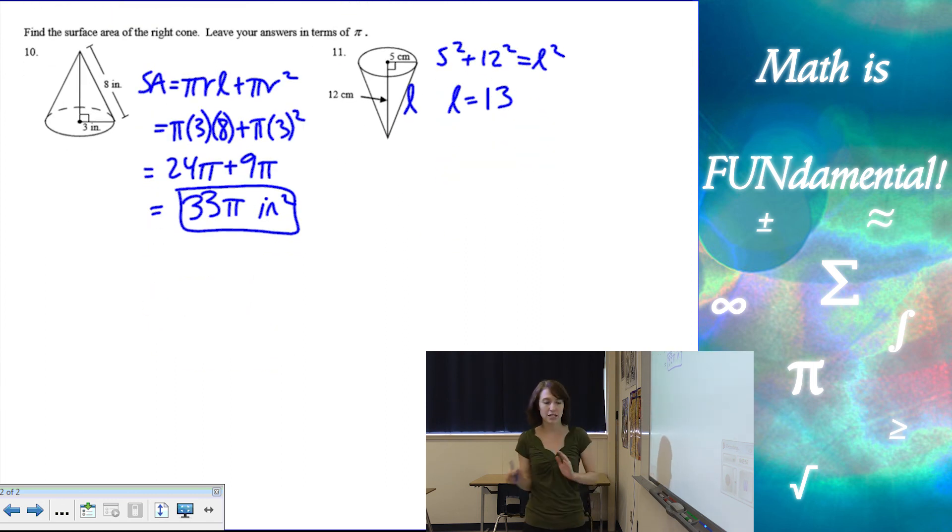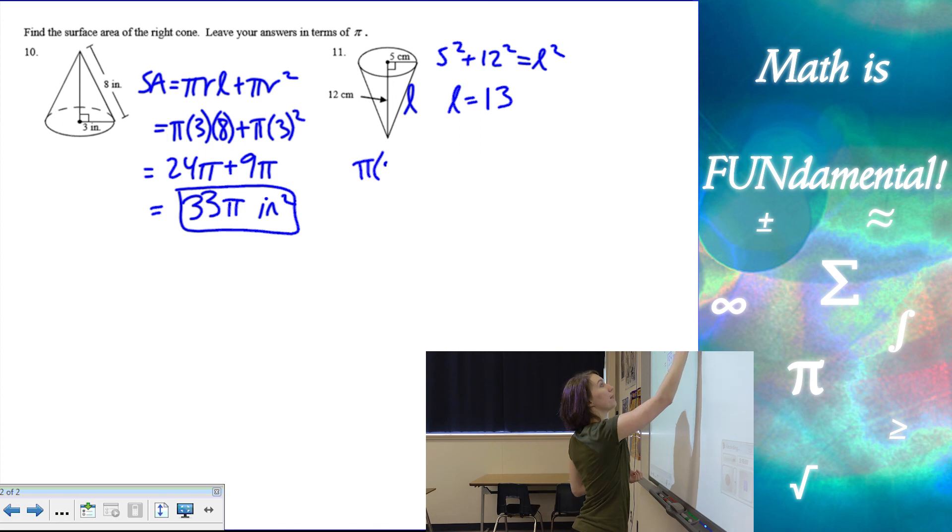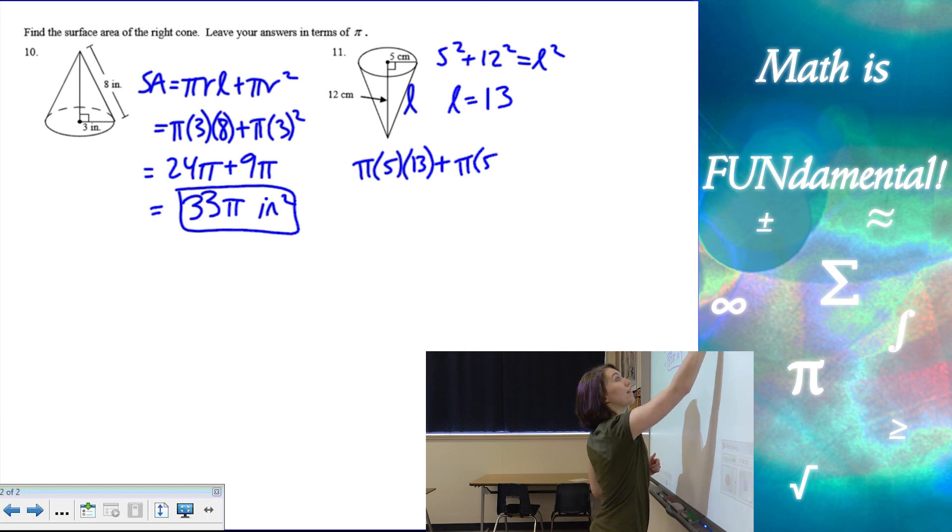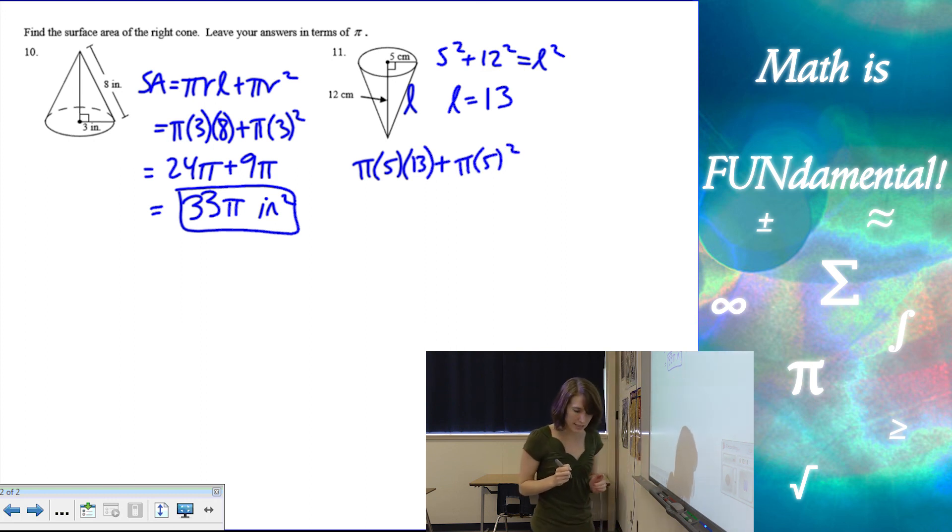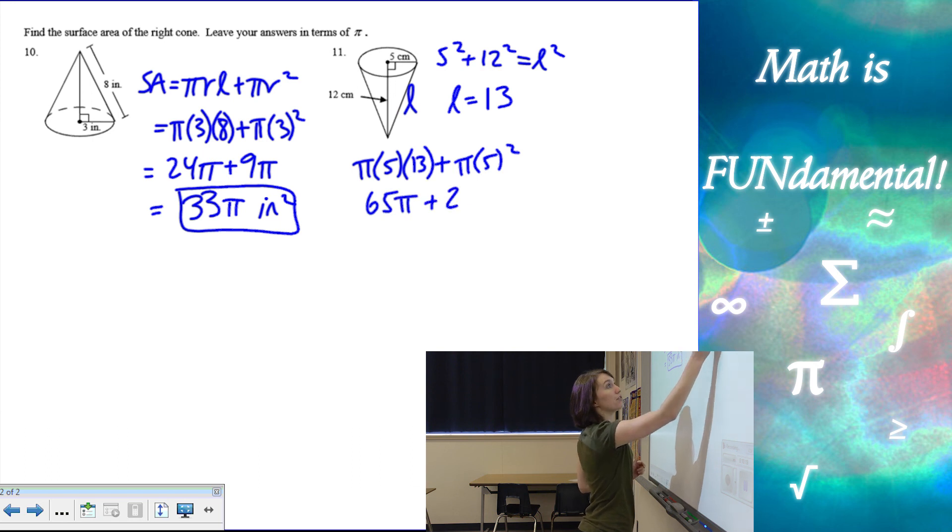Now, I can use my formula. So, I have pi times my radius times my slant height, which is 13, plus the area of the base, which is pi times 5 squared. And, simplifying that, I have 65 pi plus 25 pi, and that's going to give me 90 pi centimeters squared.